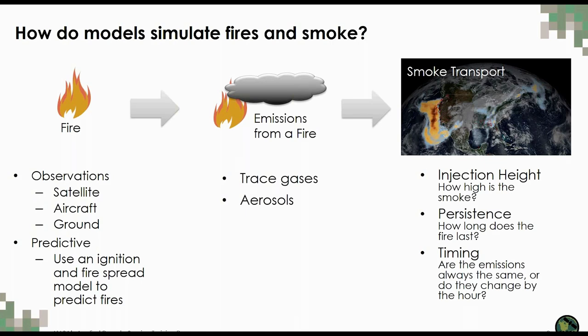In addition to how much, where, and when the smoke is emitted into the model, other information is needed — such as how high did the smoke get, and how long did the fire last? Observations can tell us some of this. For example, active remote sensing measurements like LIDARs can give us information about the height of a smoke plume, but they don't have a lot of spatial coverage on a given day. Geostationary observations can give information about changes in fire strength throughout the day, but clouds typically interfere with our ability to see fires. When we don't have observations, a model makes assumptions about each of these factors.